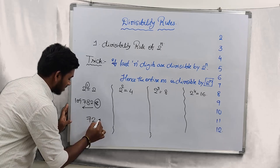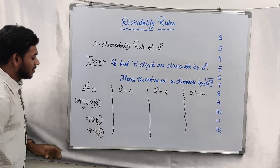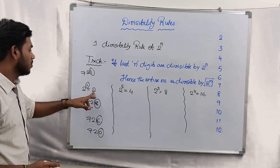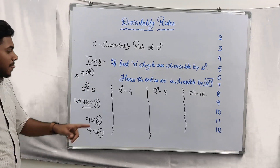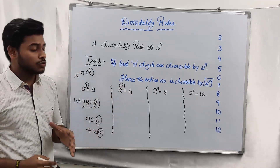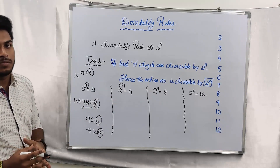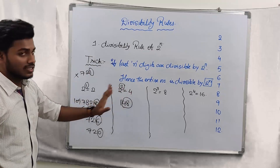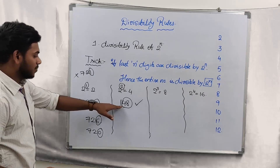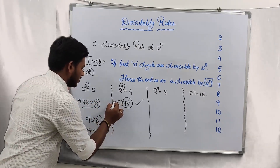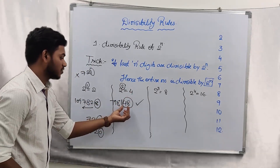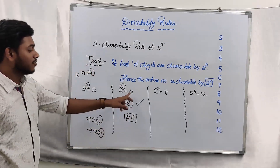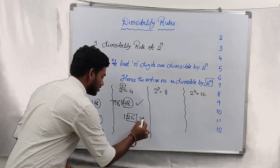Look at another example: 726 or 720. Here the last digits are divisible by 2, hence the entire numbers are divisible by 2. For 4, n value is 2, so the last two digits must be divisible by 4. For example, 1408 — the last two digits are 08, which is divisible by 4, hence the entire number is divisible by 4. You can write any numbers on the left side; it doesn't affect divisibility. But for 126, the last two digits are 26, which is not divisible by 4, so the entire number is not divisible by 4.